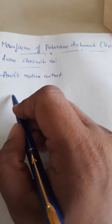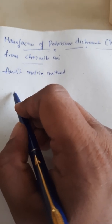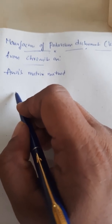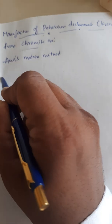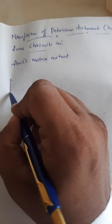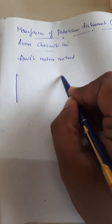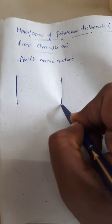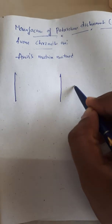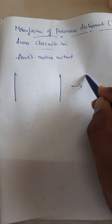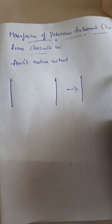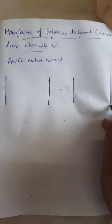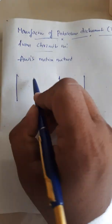So, manufacture of potassium dichromate from chromite ore — I will do this by the matrix method. You have to take two number matrices and two compound matrices.